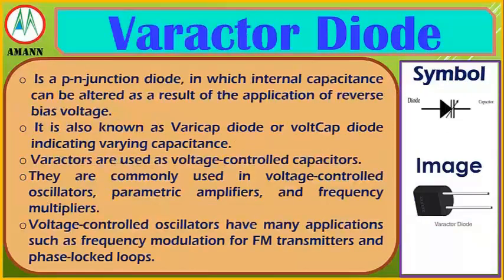Varactor diode: a P-N junction diode in which the internal capacitance can be altered as a result of the application of reverse bias voltage. It is also known as a varicap diode or volt-cap diode, indicating varying capacitance. Varactors are used as voltage-controlled capacitors and are commonly used in voltage-controlled oscillators, parametric amplifiers, and frequency multipliers.